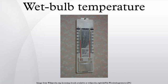Wet bulb temperature is measured using a thermometer that has its bulb wrapped in cloth — called a sock — that is kept wet with distilled water via wicking action. Such an instrument is called a wet bulb thermometer. A widely used device for measuring wet and dry bulb temperature is a sling psychrometer, which consists of a pair of mercury bulb thermometers — one with a wet sock to measure the wet bulb temperature and the other with the bulb exposed and dry for the dry bulb temperature. The thermometers are attached to a swiveling handle which allows them to be whirled around so that water evaporates from the sock and cools the wet bulb until it reaches thermal equilibrium.